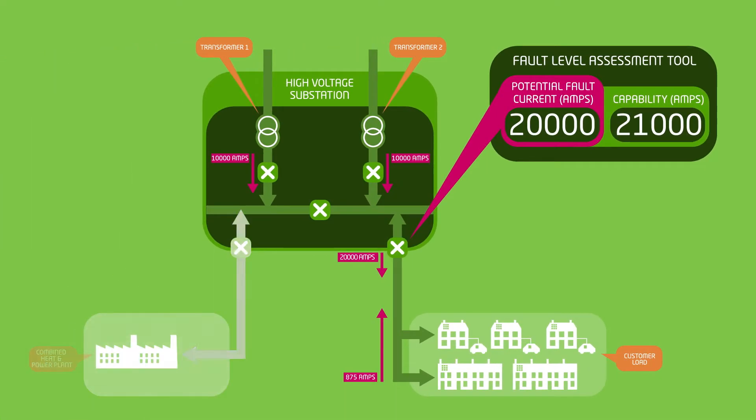But what if we need to connect additional demand or generation to the network? This will increase the total potential fault current to above the capability of the high voltage circuit breaker, leaving the substation vulnerable to damage if there's a fault.